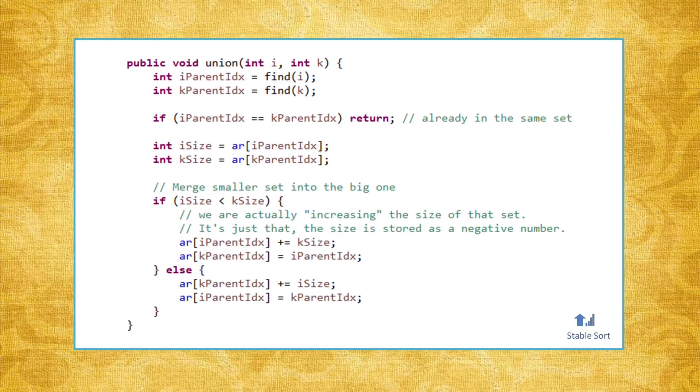The union operation starts off by finding the endpoints of each chain, and then links the smaller set to the bigger one.